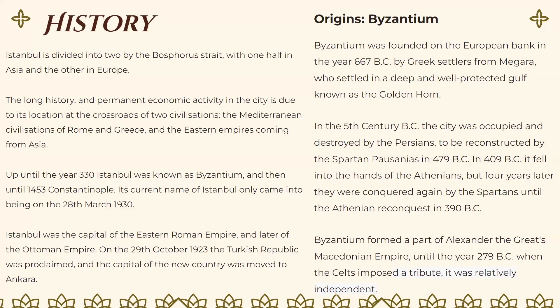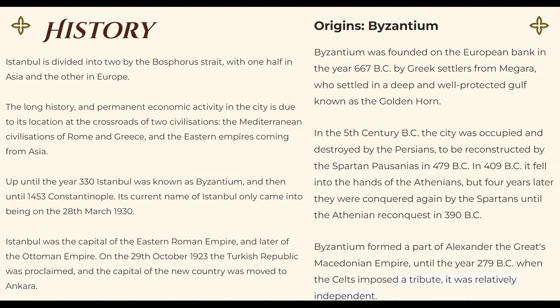A little about the origins of Byzantium: Byzantium was founded on the European bank in the year 667 BC by Greek settlers from Megara, who settled in a deep, well-protected gulf known as the Golden Horn. In the 5th century BC, the city was occupied and destroyed by Persians, then reconstructed by the Spartans in 475 BC. In 409 BC it fell to the Athenians, but four years later was conquered again by Spartans, until the Athenian conquest in 390 BC. Byzantium formed part of Alexander the Great's Macedonian Empire until 279 BC, when the Celts imposed a tribute and it was relatively independent.